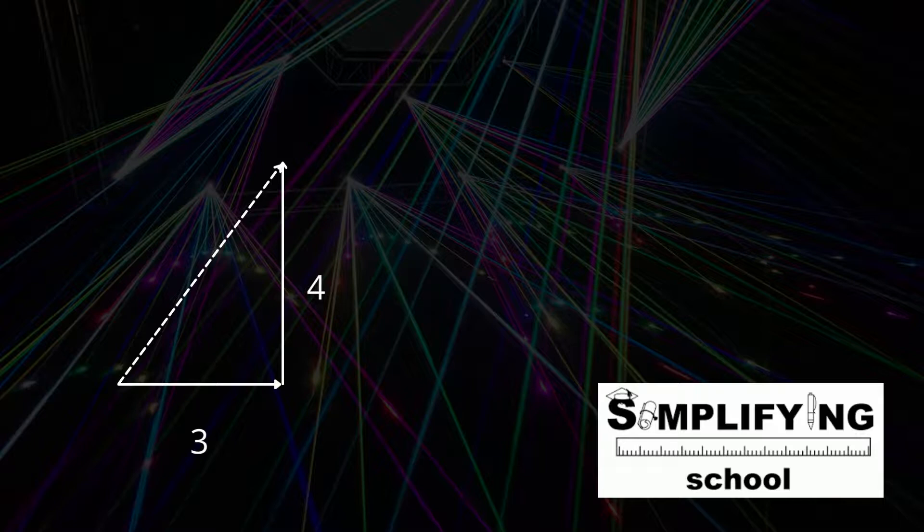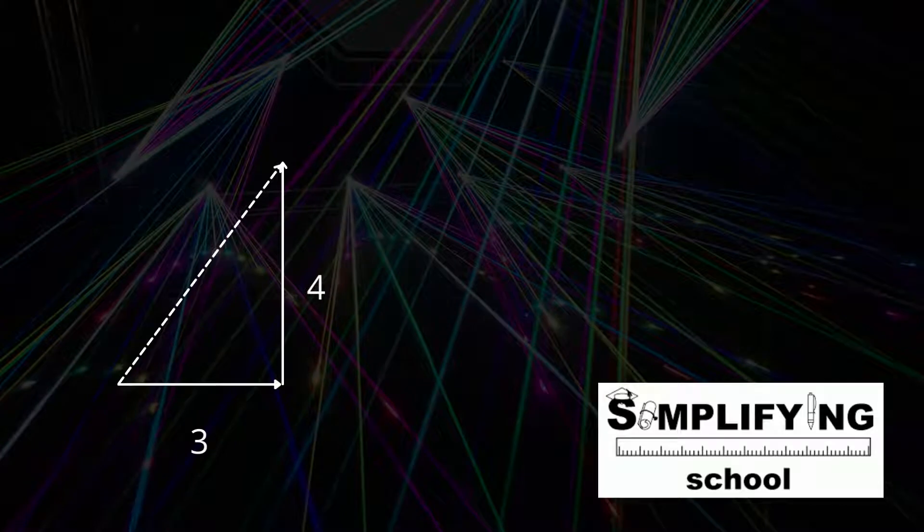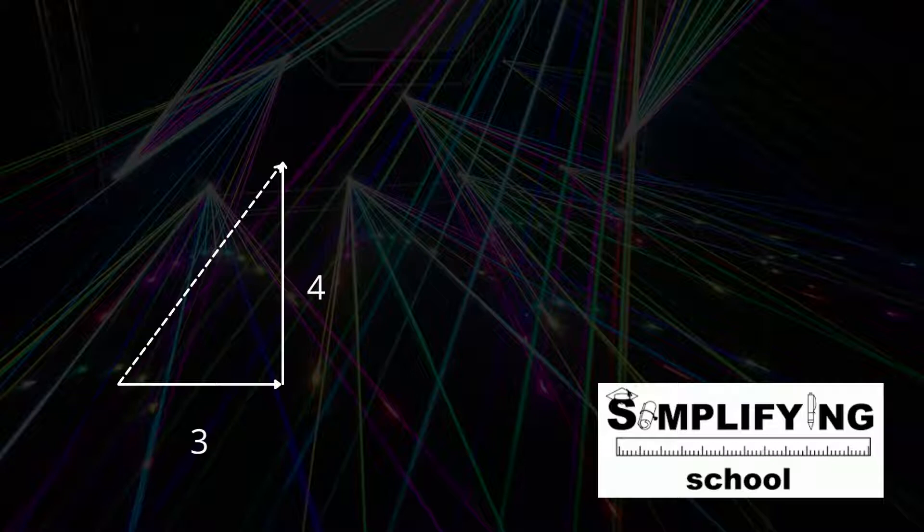Let's say we have a vector of 3 units to the right and 4 units up. We can arrange the vectors according to the head-to-tail method. If we go straight from the tail of the first vector to the head of the second vector, we will draw in the resultant.